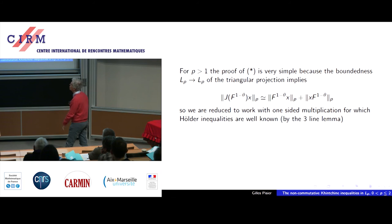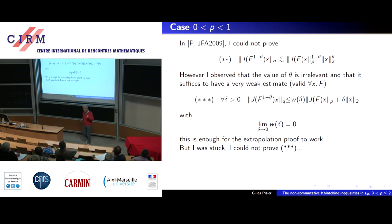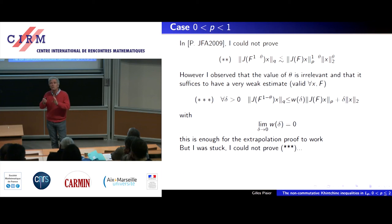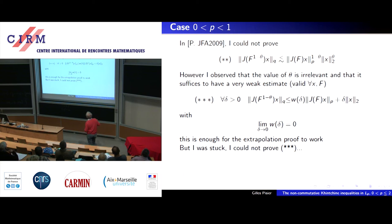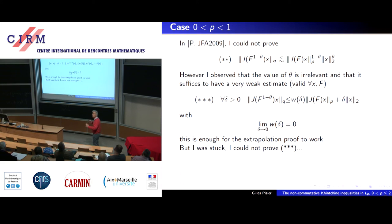For P > 1, using the triangular projection one can show the Jordan product decomposes as the sum of norms of the left and right products separately, making everything much simpler and reducing to standard methods. For P between 0 and 1, I was stuck. In my 2009 paper I formulated the weakest condition that makes the extrapolation principle work: a weak Hölder-type form where you only need w_δ tending to zero uniformly over matrix size — not any specific rate.